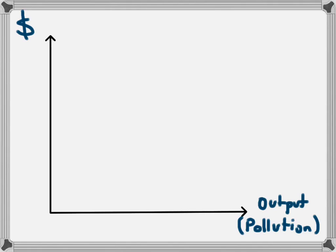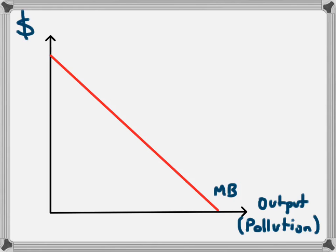This business will benefit from increasing the amount of output, but the marginal benefit will decrease. As we get into larger and larger output levels, the marginal benefit of each unit will decrease, while at low levels of output each marginal benefit will be greater. So we end up with a marginal benefit curve which is downward sloping. The business will keep producing while the benefit of extra production is positive, all the way until output level O1, which is the level a profit-maximising firm would produce at.